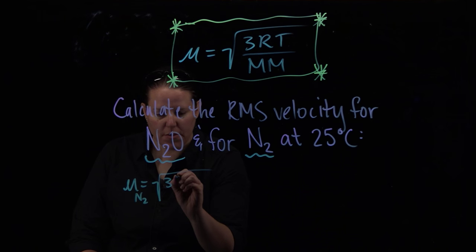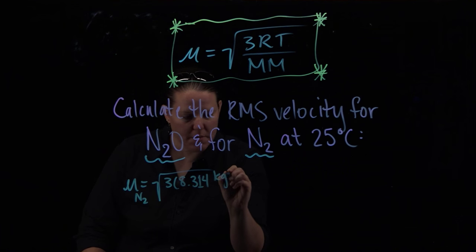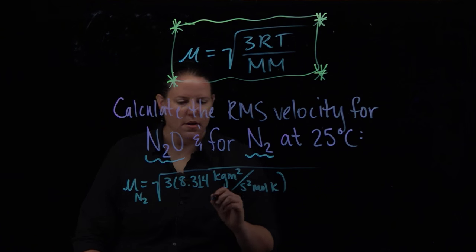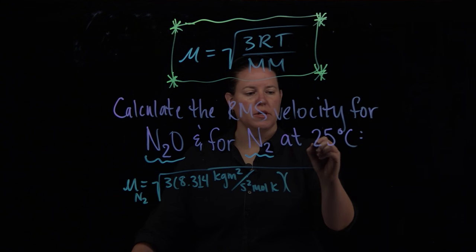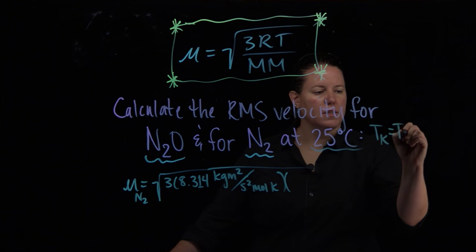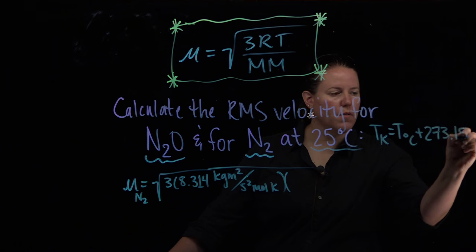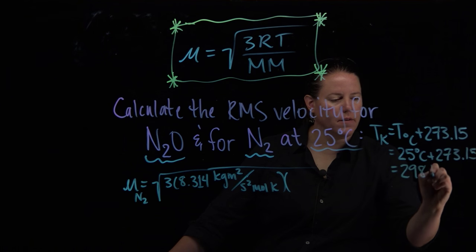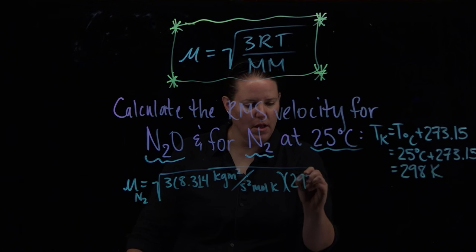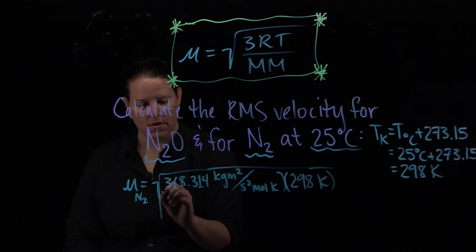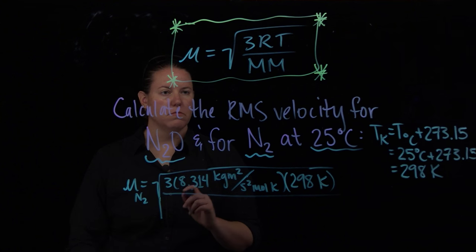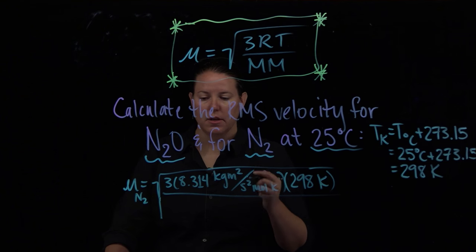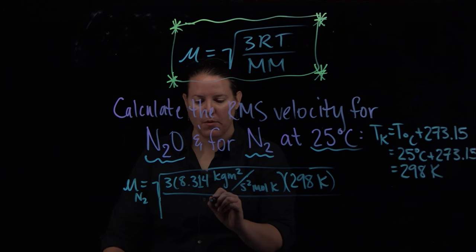So let's do the root mean square velocity for N2. For N2, it'd be 3 times 8.314 kilograms meters squared per second squared mole K. Really huge amount of units there. And times the temperature. The temperature needs to be in Kelvin, which we know the temperature in Kelvin is the temperature in degrees Celsius plus 273.15. Which means it's 25 degrees Celsius plus 273.15, which gives us 298 Kelvin. We could put 298.15 if we wanted to, but let's not make ourselves a little happier by not overcomplicating things. And then we, of course, need the molar mass of N2.